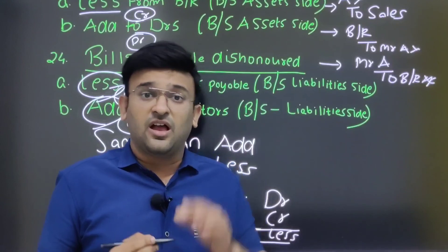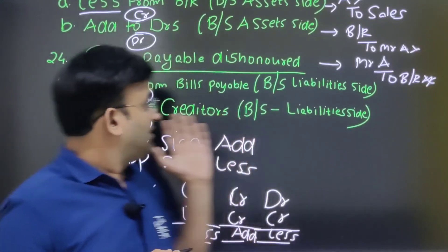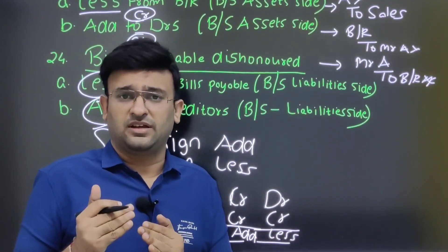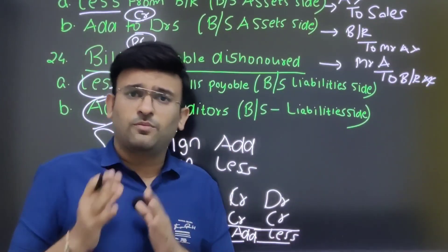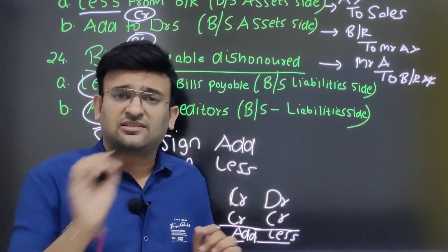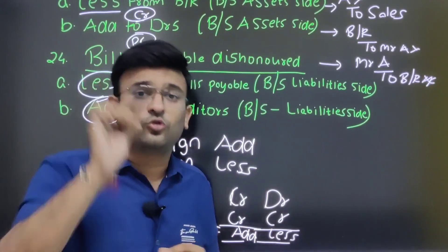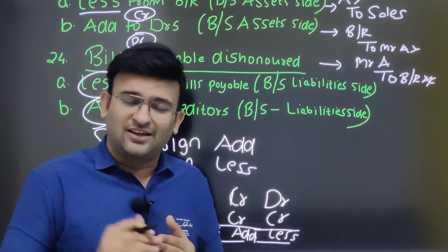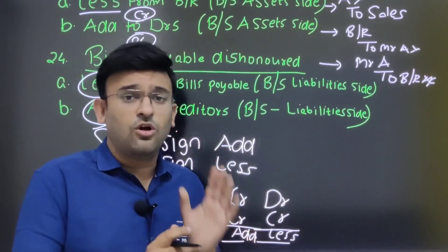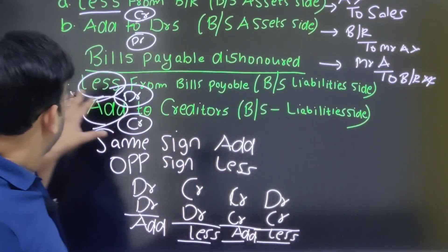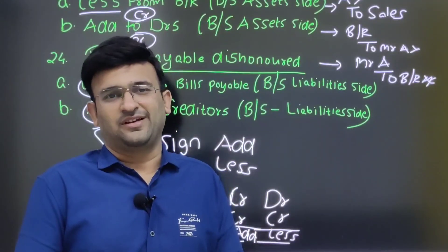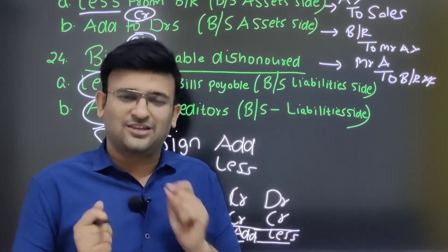Each and everyone, today we have covered a good amount — almost 9 adjustments. You need to write and make notes properly. We will continue further. Total adjustments we will cover: 24 adjustments. Okay, thank you.